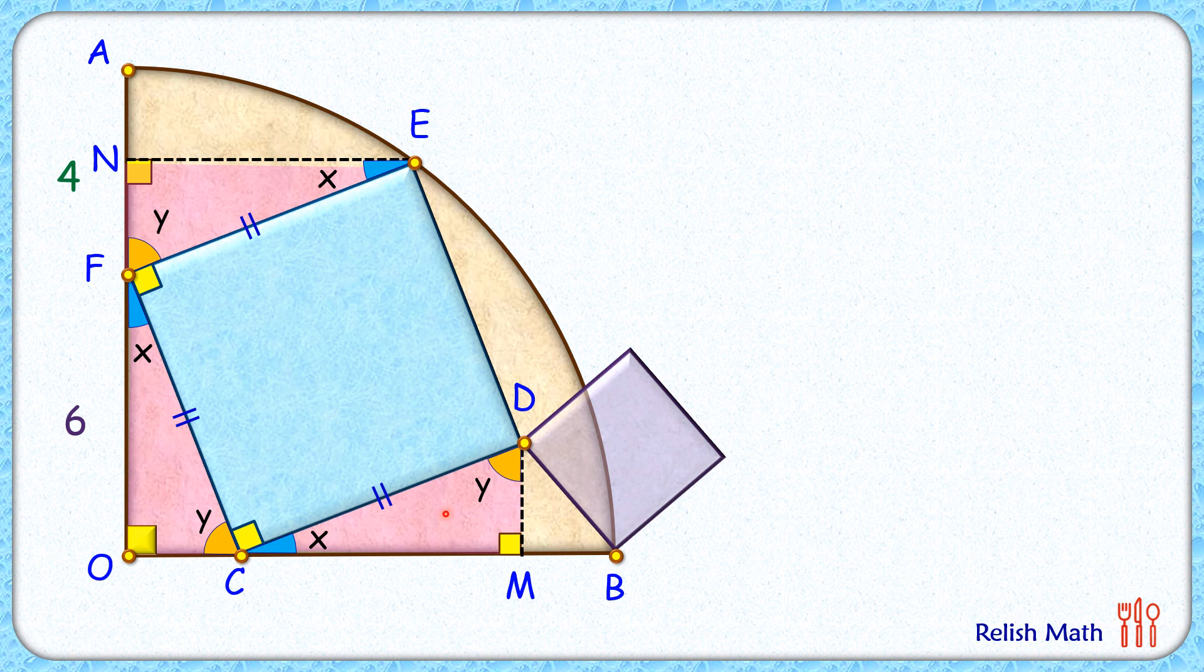As the triangles are congruent, thus the corresponding sides will be equal. Here we can say that NE length will equal FO will equal CM. But FO length is given as 6 centimeters, thus NE length will also be 6 centimeters and CM length will be 6 centimeters.